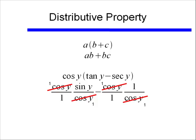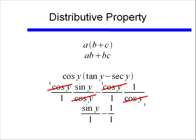Remember when we reduce, what we're really doing is dividing. I'm dividing a cosine y out of my numerator and dividing a cosine y out of my denominator, and it doesn't leave behind a 0, it leaves behind a 1. So when I do my reducing, I end up with sine y over 1 minus 1 over 1, or sine y minus 1.